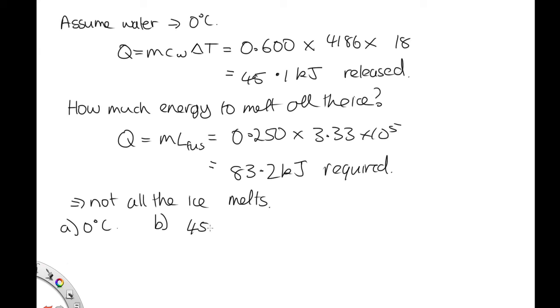So 45.1 times 10^3 equals the mass of ice that melts times the latent heat of fusion, 3.33 times 10^5. The mass of ice that melts is 0.13556 kilograms or 136 grams.